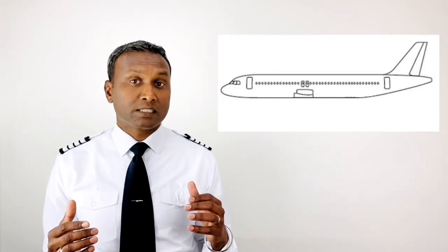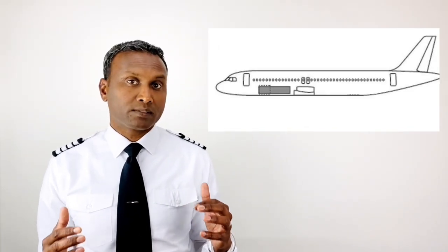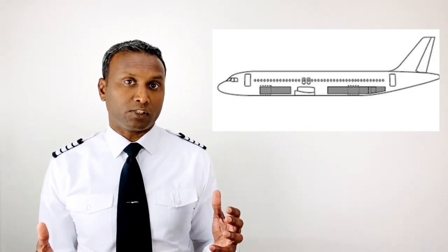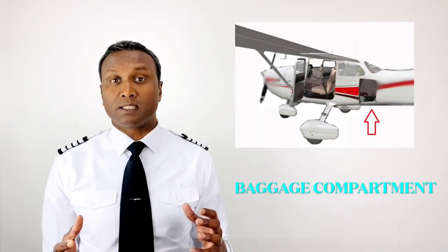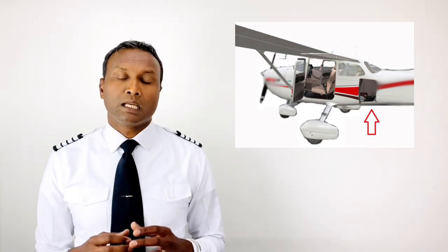For aircraft designed to carry passengers, however, the cargo is kept in a separate section called the cargo bay. In larger aircraft, typically this is in the lower section of the fuselage. In smaller aircraft, cargo may be placed in a section of the fuselage called the baggage compartment. Depending on the type of aircraft, there can be many variations of the shape of the fuselage.